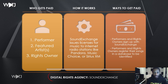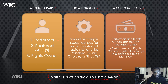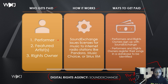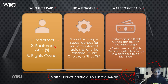When thinking about digital rights agencies — specifically SoundExchange — who gets paid, how it works, and ways to get paid. The performer gets paid from digital radio performances. Examples of digital radio are Pandora, iHeart, and Django — now called radio airplay — and a host of other online digital radio stations. Once the music is performed on the digital radio station, the performer gets paid, the featured artist gets paid, and the rights owner — the people that own the master recording — get paid as well.